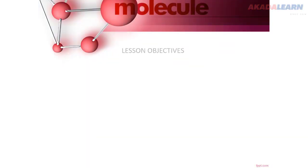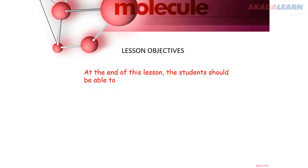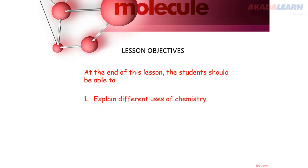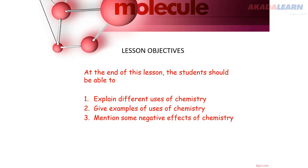Lesson Objectives: At the end of this lesson, the student should be able to explain different uses of chemistry, give examples of uses of chemistry, and mention some negative effects of chemistry to humanity.